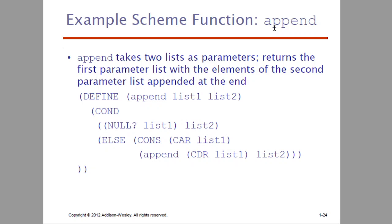Here is the append function. The Scheme append function takes two lists as parameters and returns the second list appended to the first. Let's use append to combine and concatenate two lists. We are appending list1 and list2, first checking whether list1 is null, and in all cases we will append list1 and list2.